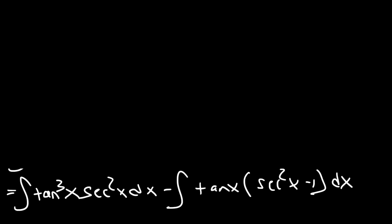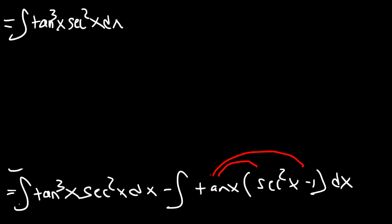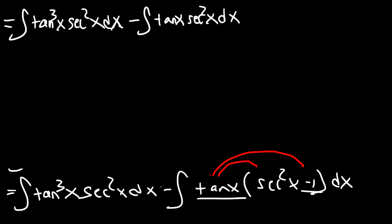We're going to distribute tangent to secant squared and negative 1 and break that into two more integrals. The first integral stays the same. The second integral is tangent secant squared with a negative sign in front: minus the integral of tangent x secant squared dx. Then tangent times negative 1 gives us negative tangent, and with the negative already in front, that becomes plus the integral of tangent x dx.